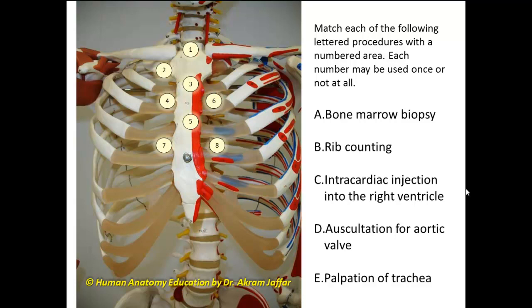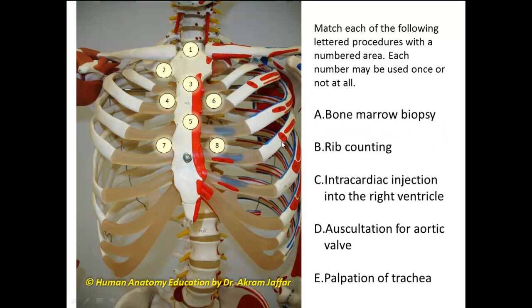Here we are asked to match each of the following letters — the procedures — with a numbered area. Each number may be used once or not at all. The first option is a bone marrow biopsy. Bone marrow biopsy is usually taken from the sternum because the sternum has red bone marrow and a subcutaneous position. Usually a bone marrow biopsy is taken from the body of the sternum.